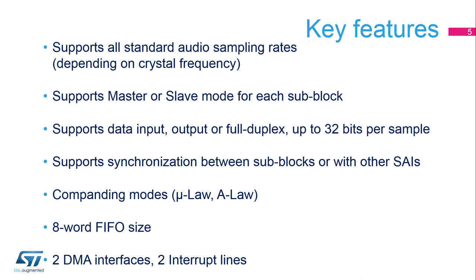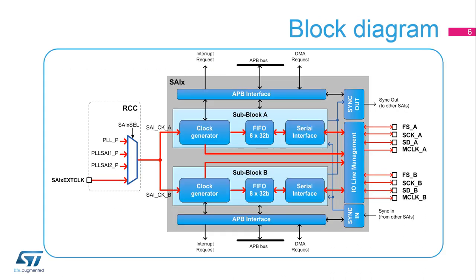The SAI also provides a FIFO buffer of eight samples, and up to two interrupt and DMA interfaces. The SAI is composed of two independent sub-blocks, A and B. Each sub-block has its own APB interface, clock generator, FIFO buffer, DMA interface, and interrupt interface. Each sub-block can be configured in receive or transmit, master, or slave with its own protocol. Internal and external synchronization allows two sub-blocks to be synchronized, or two SAIs to be synchronized. Each sub-block can handle up to four IOs.